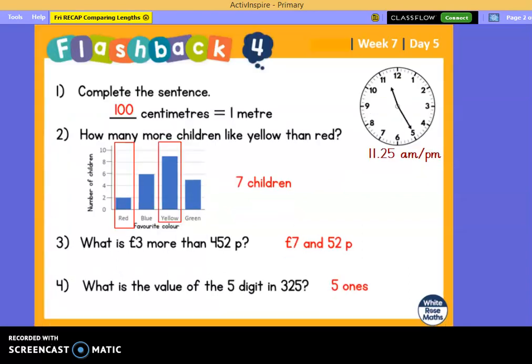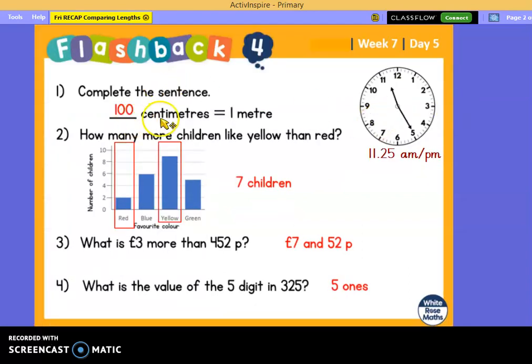Let's have a look at how you did. Number 1: 100 centimetres is equal to 1 metre. We will need that fact today. Number 2: How many more children like yellow than red? So here's red at 2, here's yellow at 9. 9 take away 2 is 7. 7 children. Number 3: What is £3 more than 452 pence? That's £7.52. Number 4: What is the value of the 5 in 325? It's 5 ones.